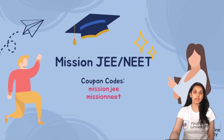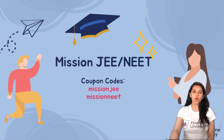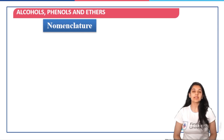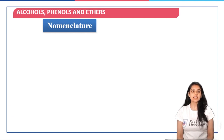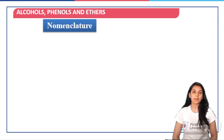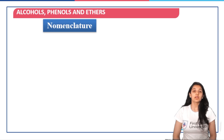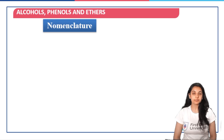Before we begin, a piece of information: you can use the coupon codes Mission J or Mission NEET while you enroll at First Online University. Let us start with nomenclature first. Although we have discussed nomenclature at par when we were talking about the GOC, that is General Organic Chemistry, here I will introduce nomenclature in brief, but I would suggest you to practice questions by yourself.